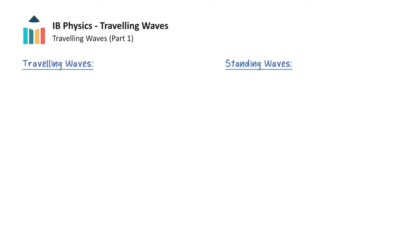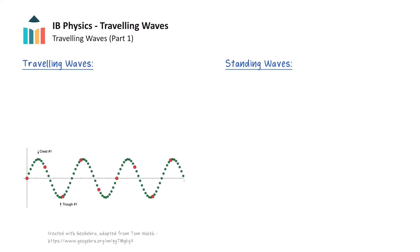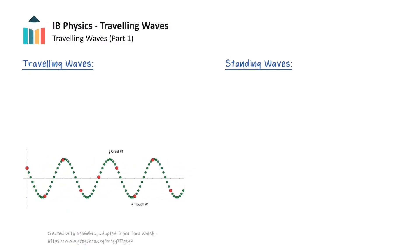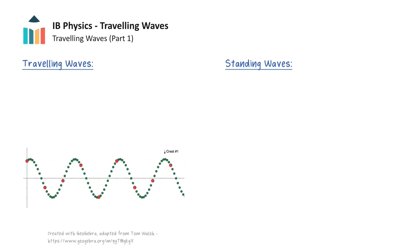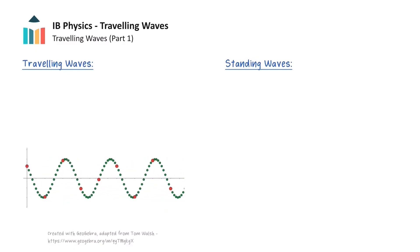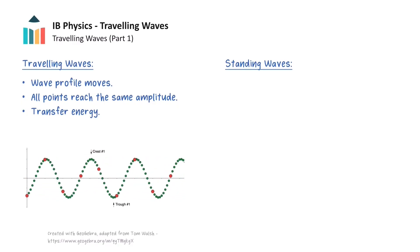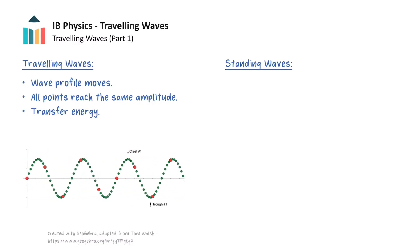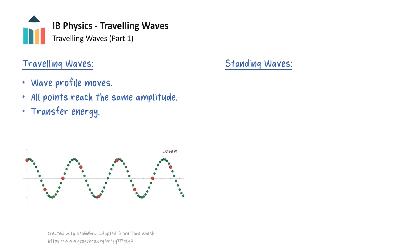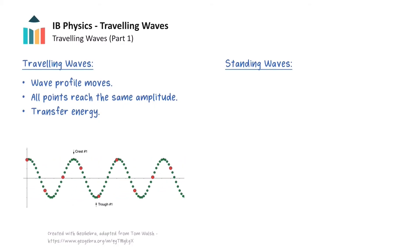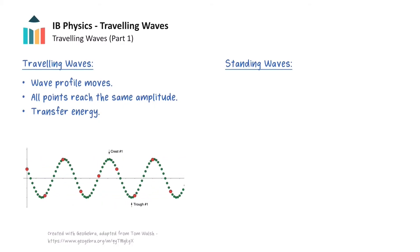A final way to distinguish waves is to categorise them as travelling waves and standing waves. An example of a travelling wave can be seen here on the left. We can see that the shape of the wave, called the wave profile, appears to move across the screen, from left to right. So we can say that the wave is travelling. The position of the crests and troughs changes with time, so every point in the medium eventually reaches the same amplitude. As this disturbance moves through the medium, there will be a transfer of energy from one location to another.